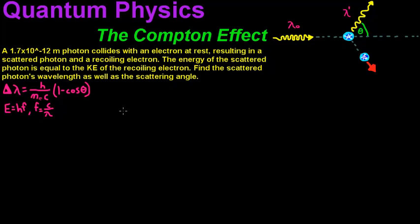Hi guys. Today we are talking about quantum physics and we are discussing the Compton Effect. In this problem, it says a 1.7 times 10 to the negative 12 meter photon — this is your incident photon — collides with this electron at rest.